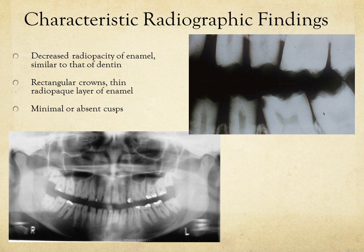On radiographs, you will see decreased opacity of enamel, closer to that of dentin. There will be rectangular crowns with a thin radiopaque layer of enamel, possible loss of proximal contacts visible on radiographs, and minimal or absent cusps that appear flattened.